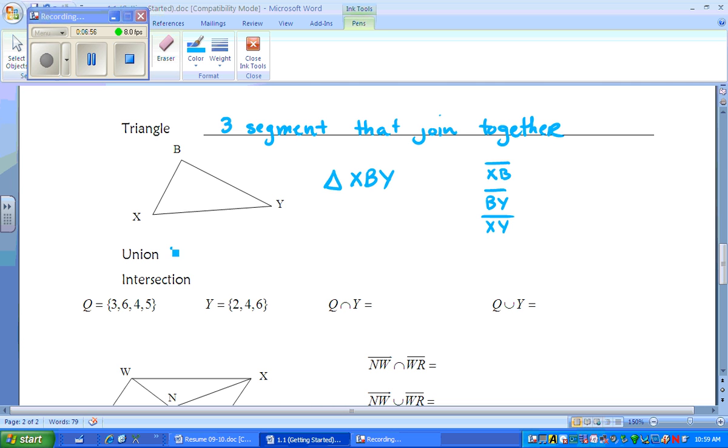The union is designated by a U shape and that means all together. The intersection is like an N shape and that means overlaps.